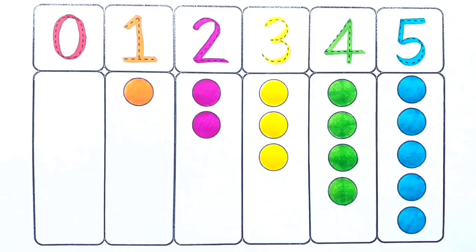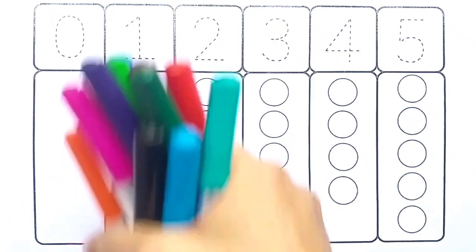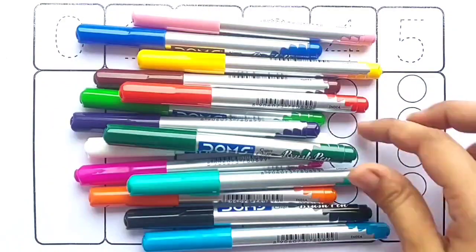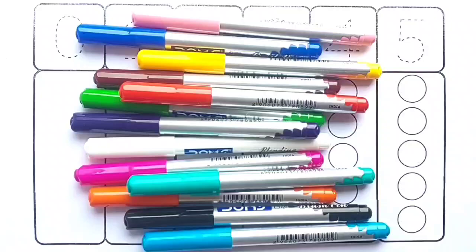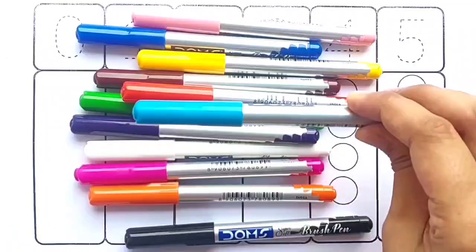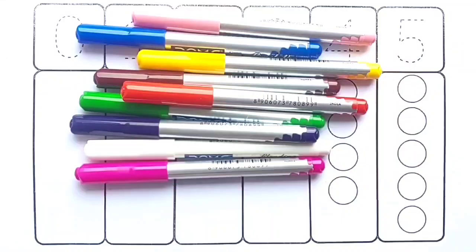Hello kids, let's learn 1 to 10 numbers. Green color, sea green color, sky blue color, black color, orange color.